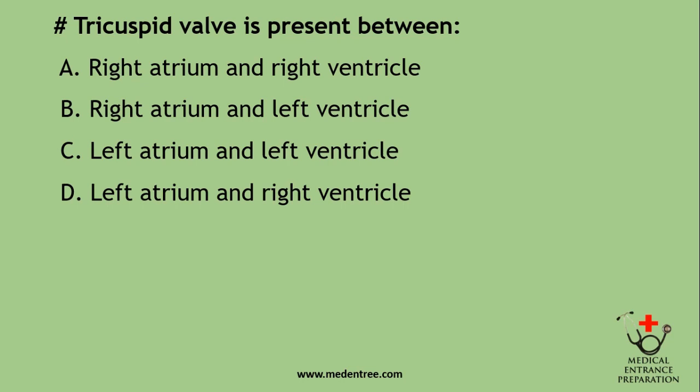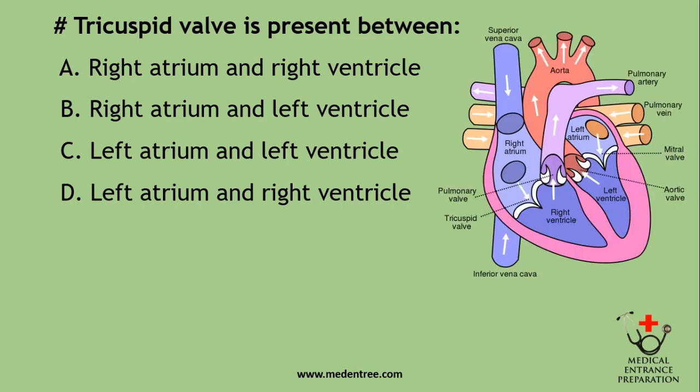Tricuspid valve is present between: right atrium and right ventricle, right atrium and left ventricle, left atrium and left ventricle, or left atrium and right ventricle? Between the right atrium and right ventricle there is the tricuspid valve. A mnemonic: humans have 32 teeth — first three, then two. On the right side: three = tricuspid; on the left side: two = bicuspid. So the correct answer is tricuspid valve on the right side — the right atrioventricular valve.